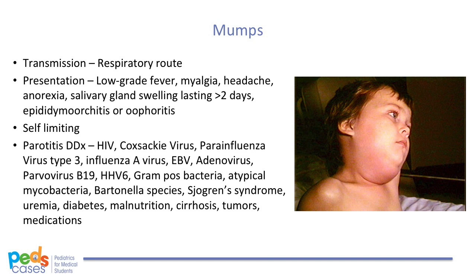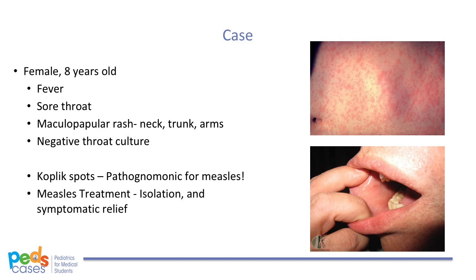Generally, mumps is self-limiting. Let's return to consider the eight-year-old girl who presented with a fever and red rash. Upon further inspection, she has blue-whitish spots on a red base inside her mouth. In this case, you decide to do viral serology because measles is a reportable disease. It's important to remember that the viral serology test must have two weeks between the two blood samples. There must be IgM present or a four-fold increase in IgG levels from sample 1 to 2 for a positive test.